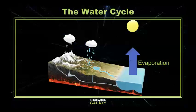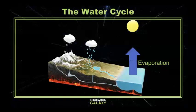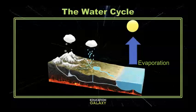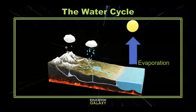Let's say that the water starts in the ocean. Since it's a cycle, it doesn't technically have a beginning, but we'll start with the ocean today. The sun beats down on the ocean, the water heats up, and the ocean water starts to evaporate. That's when water turns into its gas form, water vapor.